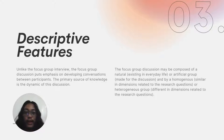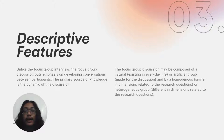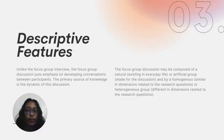In the focus group discussion, participants may be composed of a natural group — a group that exists in everyday life, such as classmates or co-workers — or an artificial group, which is a group formed specifically for the discussion, for example a collection of people brought together just for the purpose of a research project.